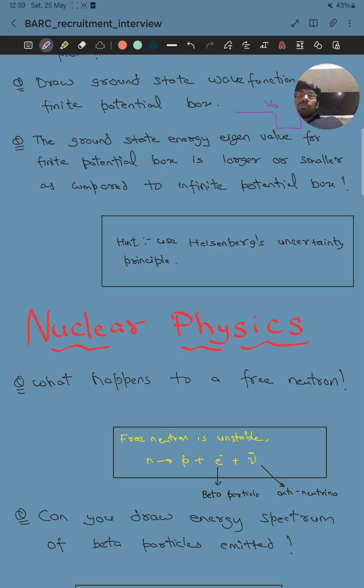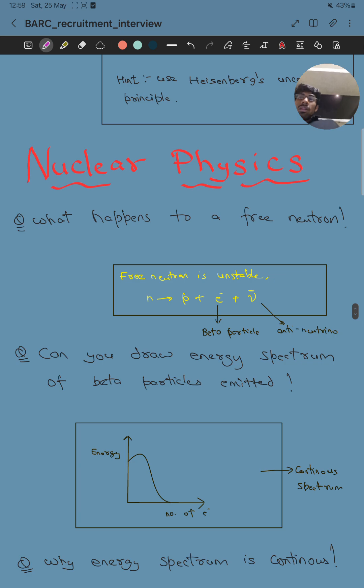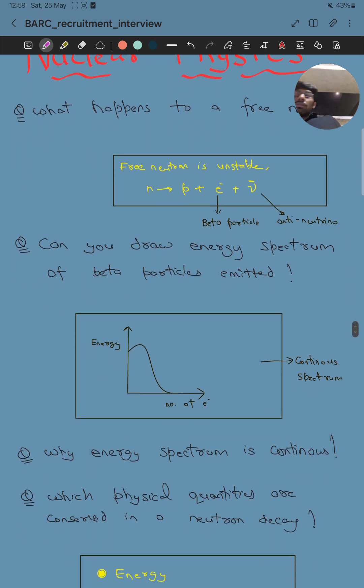Now the third member asked me about nuclear physics. Moving to nuclear physics questions. He asked what happens to a free neutron? If you know, a free neutron is unstable, so it decays to a proton, electron, and an anti-neutrino is emitted out.